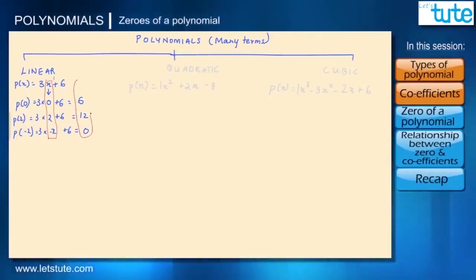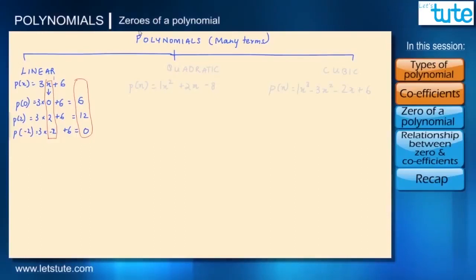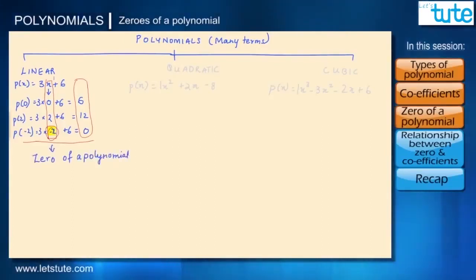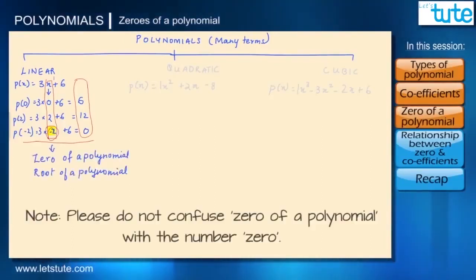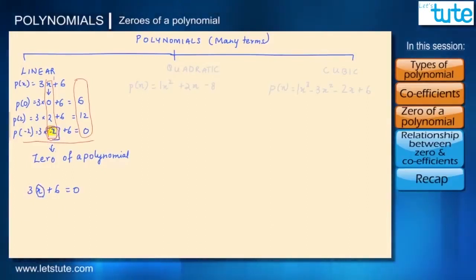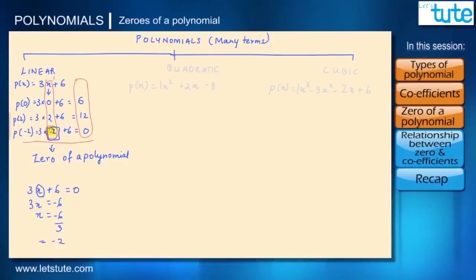When we take different values for X, the values of the polynomial also change — the polynomial depends on the variable X. When the polynomial equals 0, the value of X at that point, which is minus 2, is mathematically called a zero or root of the polynomial. So when we put the polynomial equal to 0 — for example, 3x + 6 = 0 — we should get X = minus 2. It's just the reverse process.